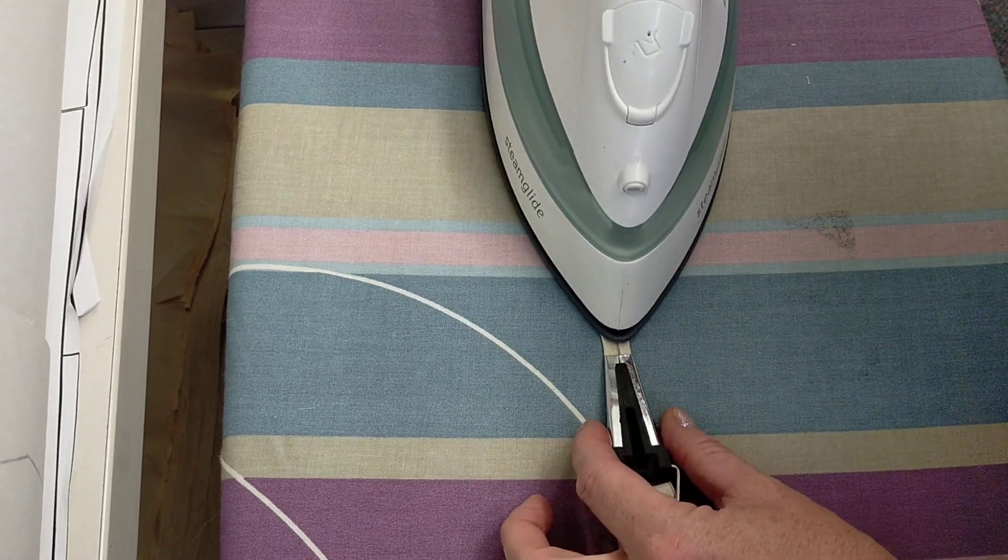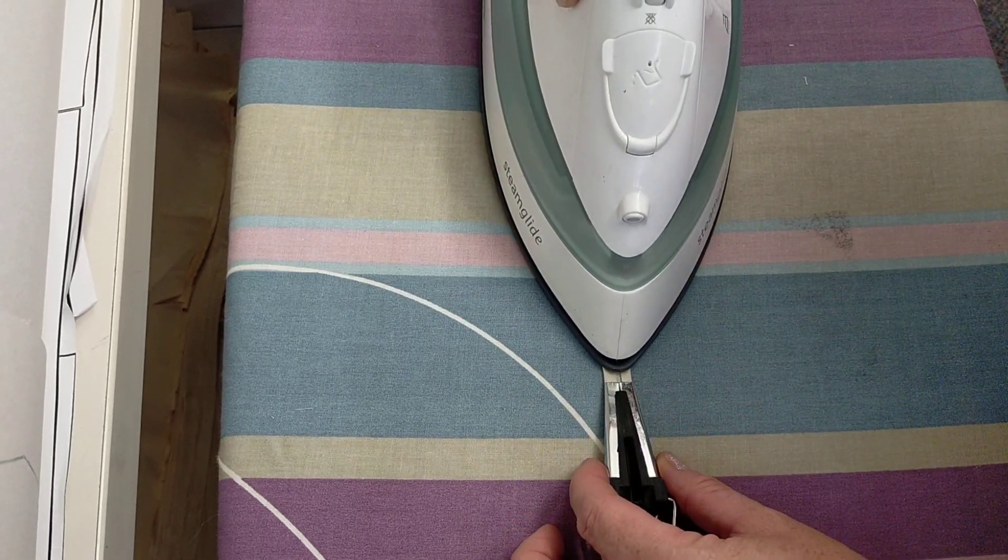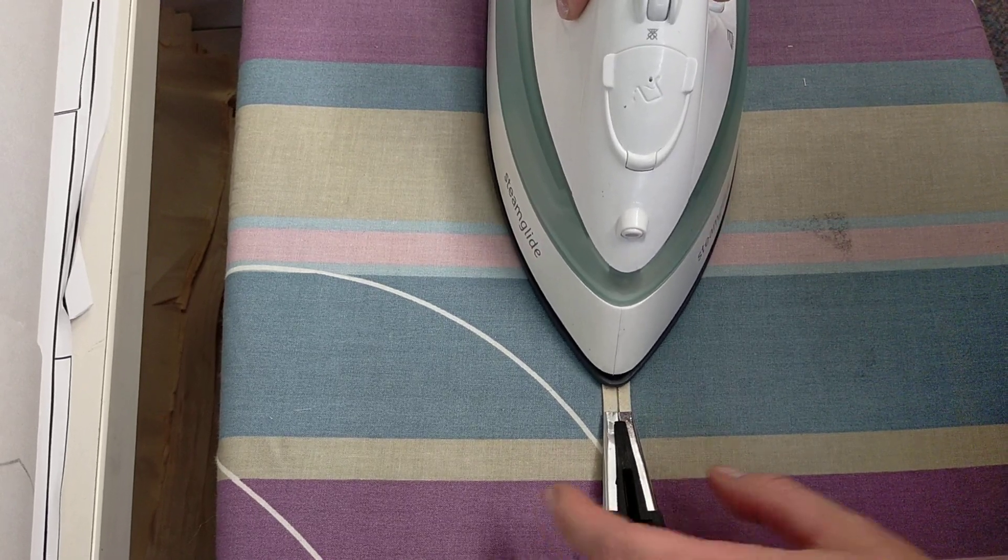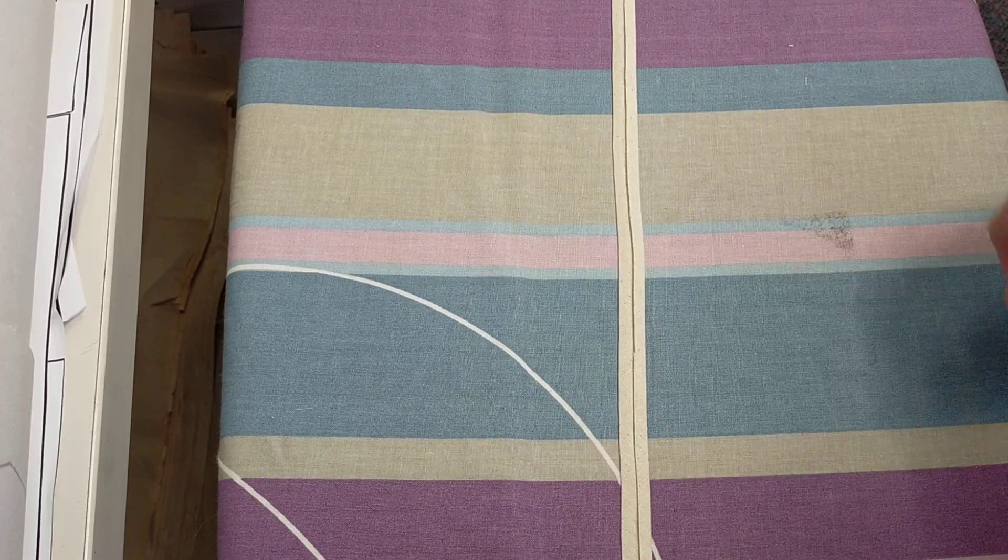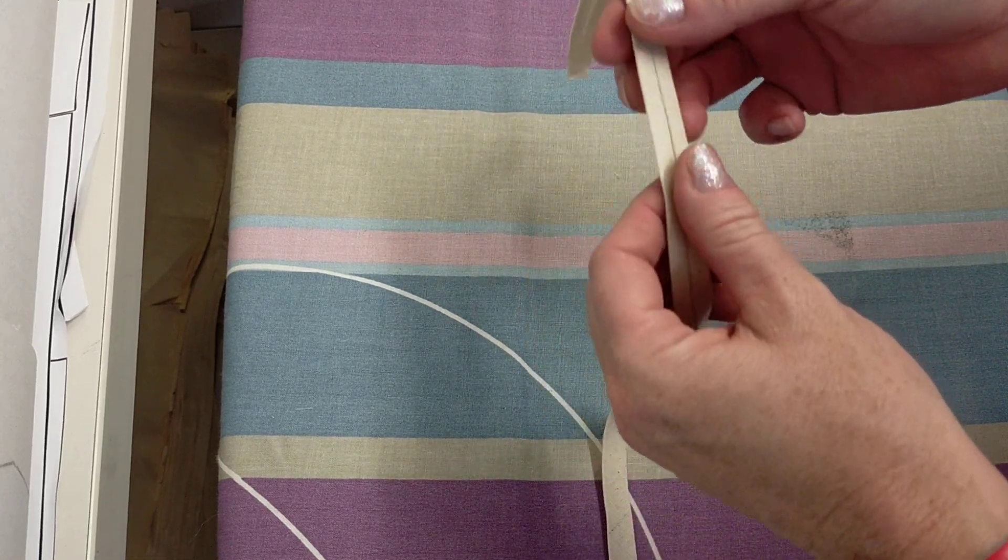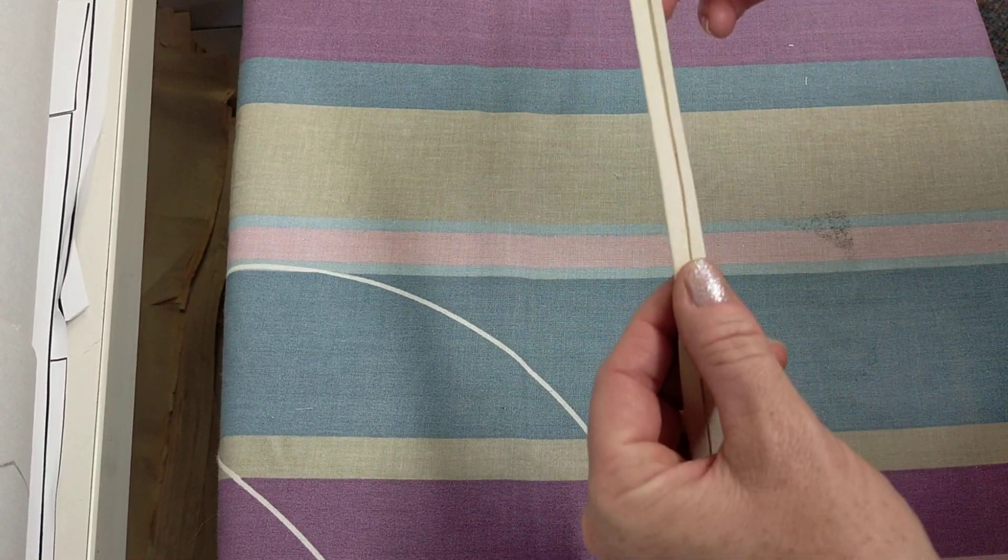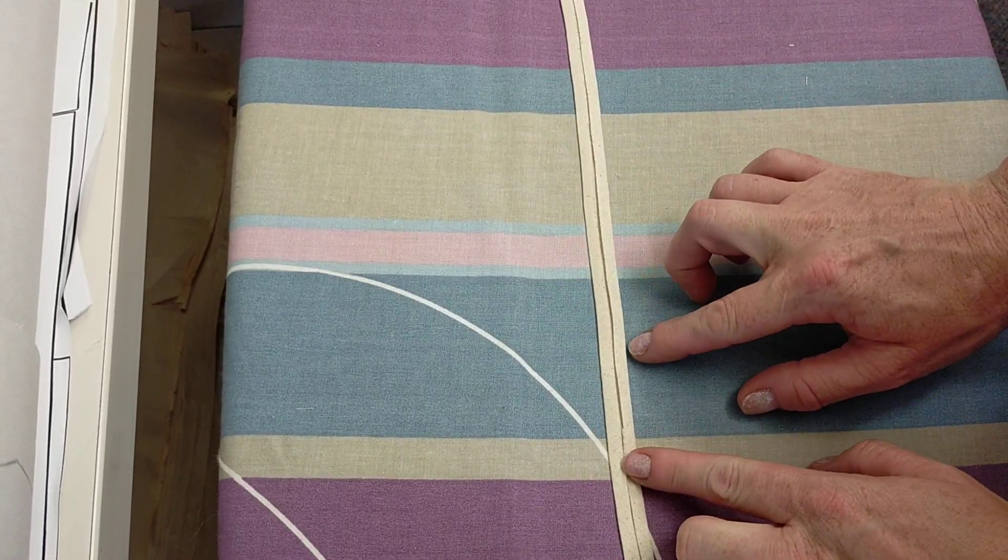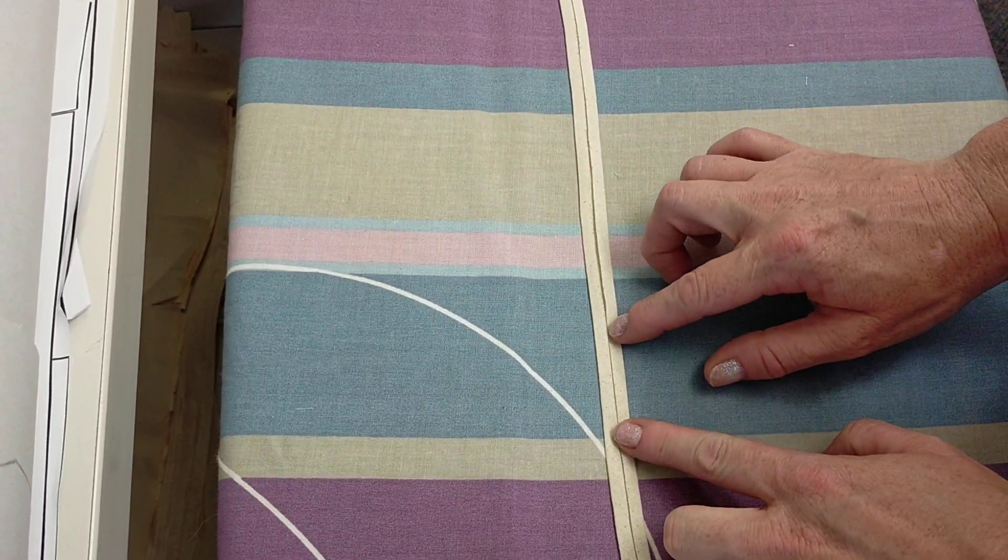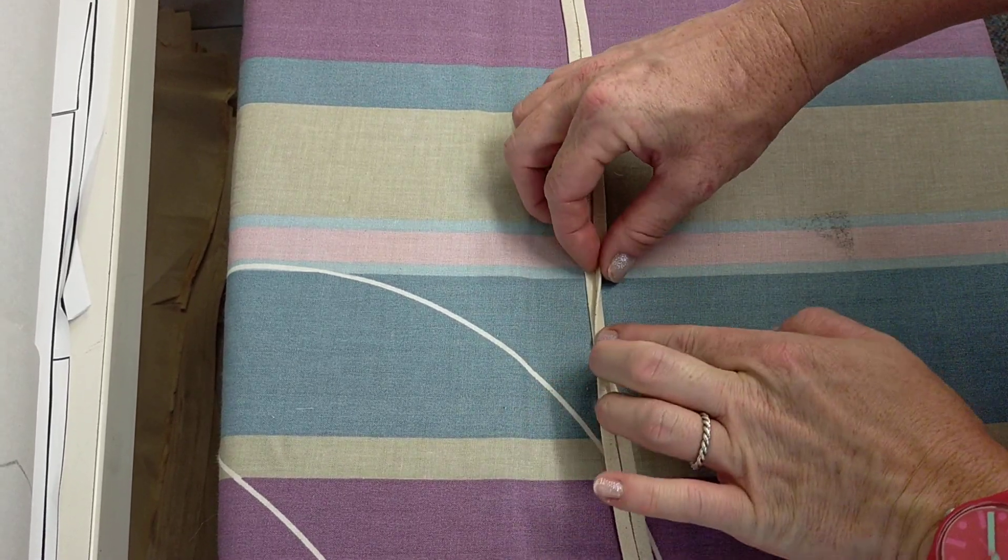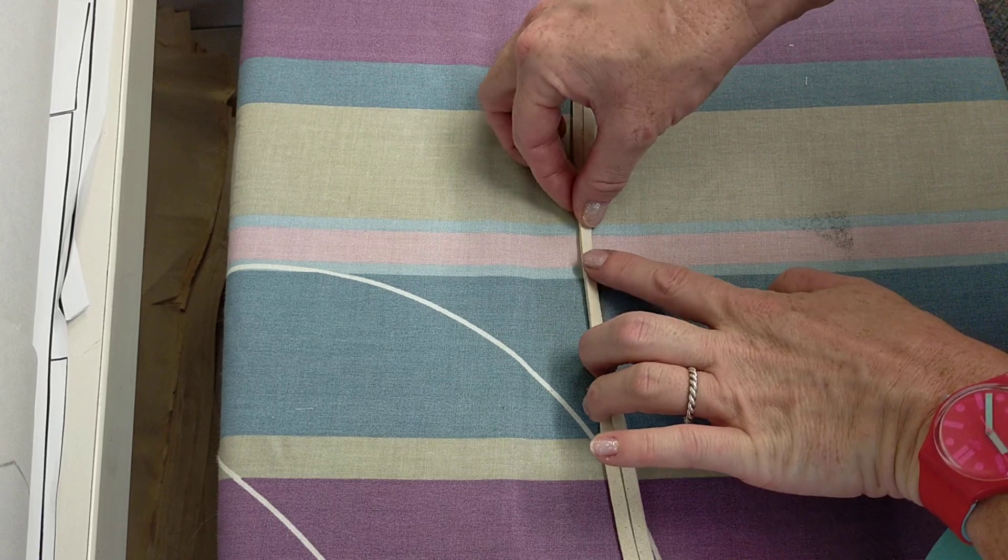And making sure that those raw edges remain in the center. You can iron that. So that is my strip that's been passed through the bias maker to fold it, so it has two folds on each side and the raw edges meet in the middle.